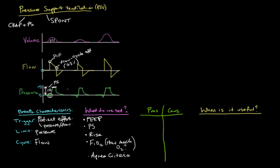What is rise? Rise is essentially how quickly we rise up to the peak pressure that we've set. We're going from 5 up to 15 — that change in pressure is 10. How quickly we go from 5 to 15 is the rise. In one example you can see it goes almost straight up from 5 to 15 immediately. In another it's on an angle — that's a slower rise. Rise time is how long it takes to get from 5 up to 15.